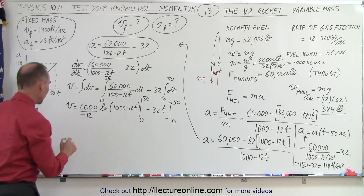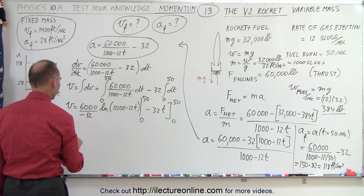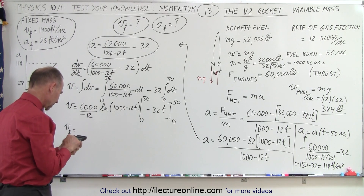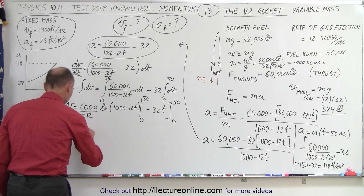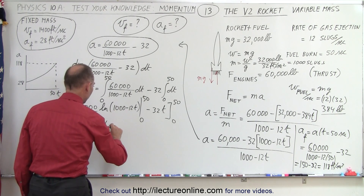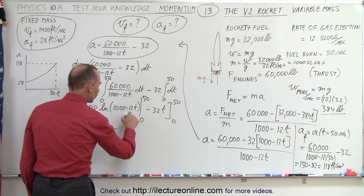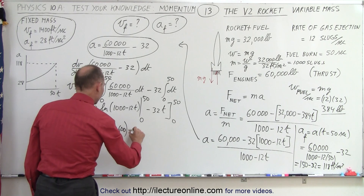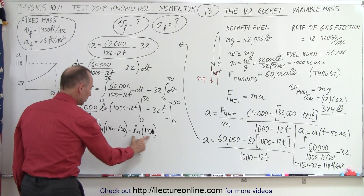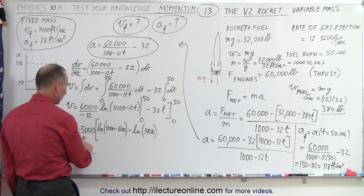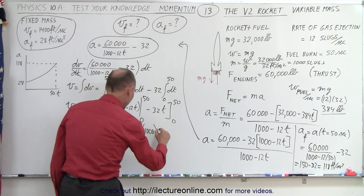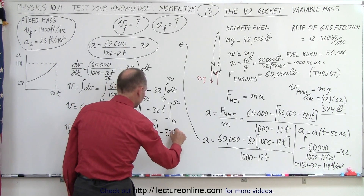Plugging in the limits: v final equals 60,000 divided by negative 12, which is negative 5,000, times [ln(1,000 minus 600) minus ln(1,000)]. That's negative 5,000 times [ln(400) minus ln(1,000)]. Since ln(400) is less than ln(1,000), we have a negative quantity times a negative quantity, giving a positive result. Then we subtract 32 times 50, which is 1,600.